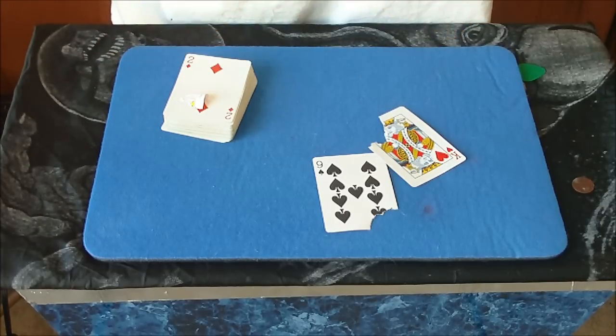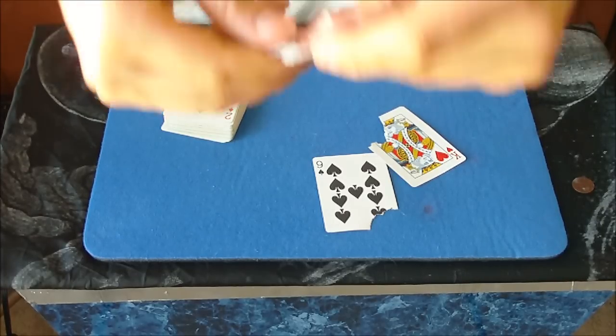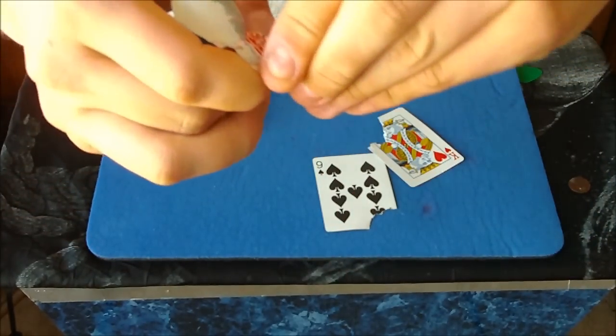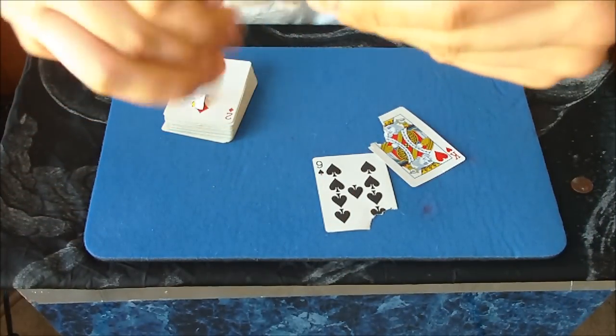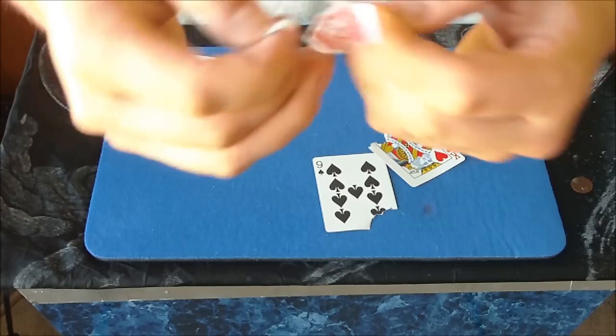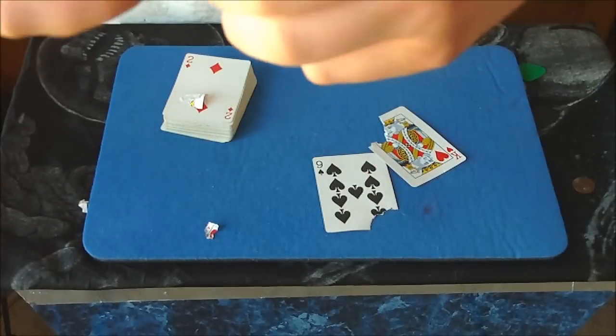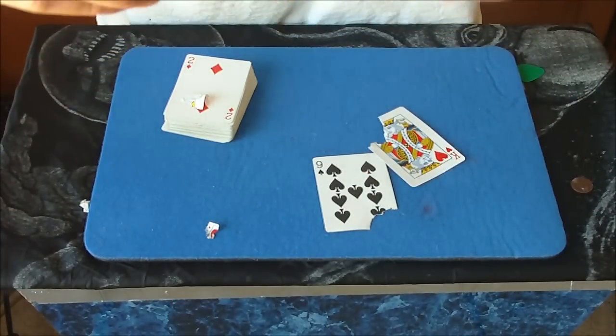Once you're done ripping it open, you can discover, you can see it right there. The card that has been chewed is in fact the nine of spades, right there in the stomach of the card.